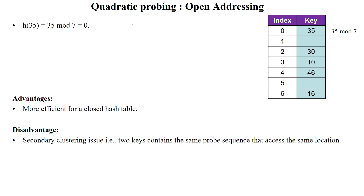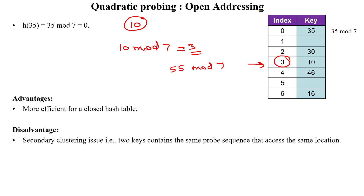For searching, suppose we want to find value 10: apply 10 mod 7, giving index 3. The program directly accesses index 3 and retrieves the data. If we want to find 55: 55 mod 7 gives index 6. Accessing index 6, the value there is not 55, so we can say data not found.